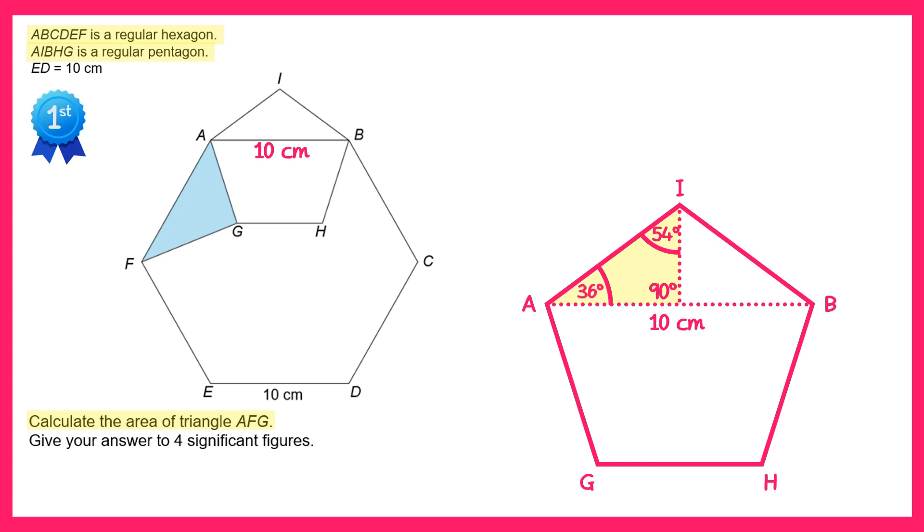And if I extend this angle around so that it meets the side AG like this, the whole angle here is another interior angle of the regular pentagon. So this must be 108 degrees. I already know some of it's 36 degrees, so if I do 108 take away 36, I'll find the other one which is 72 degrees.